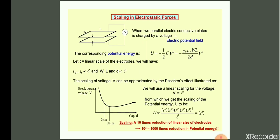This is the scaling equation: U is directly proportional to L³. From this, a 10-times reduction in the linear size of the electrodes will lead to a 1000-times reduction in the potential energy.